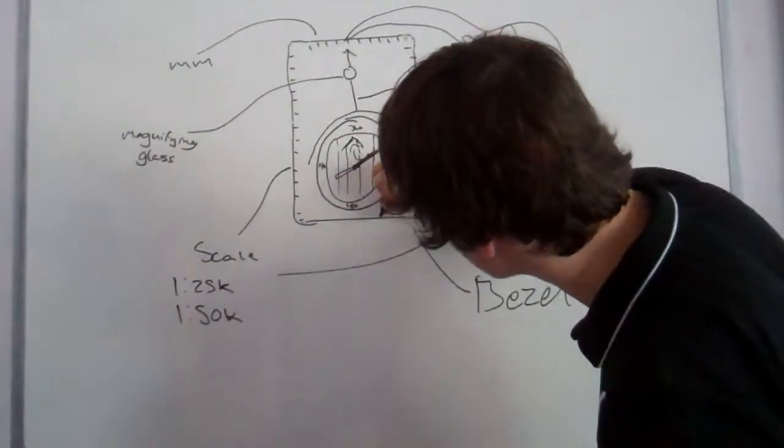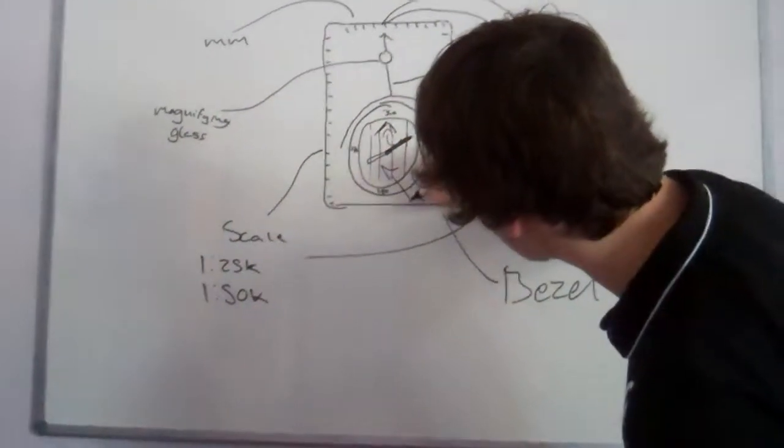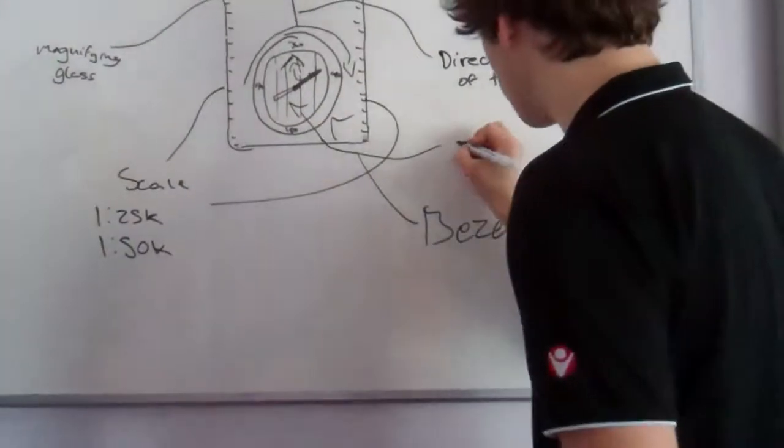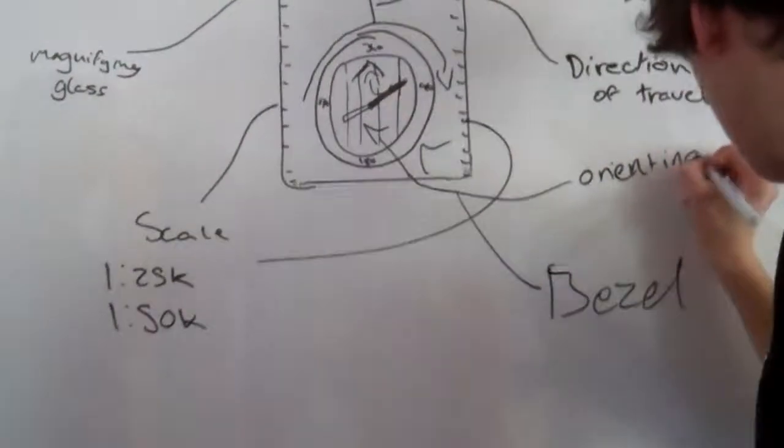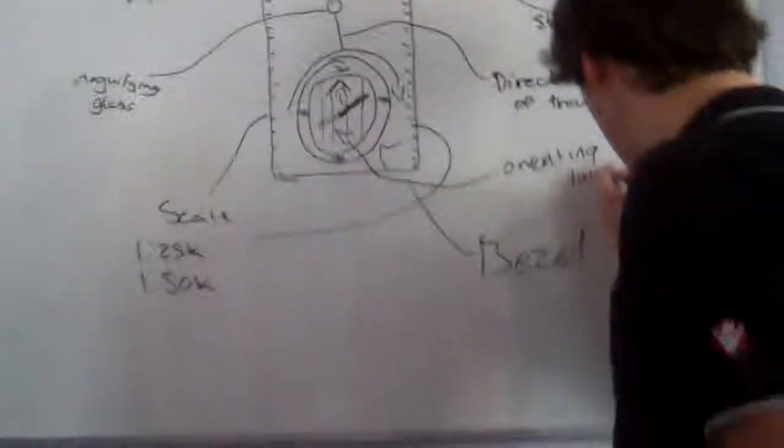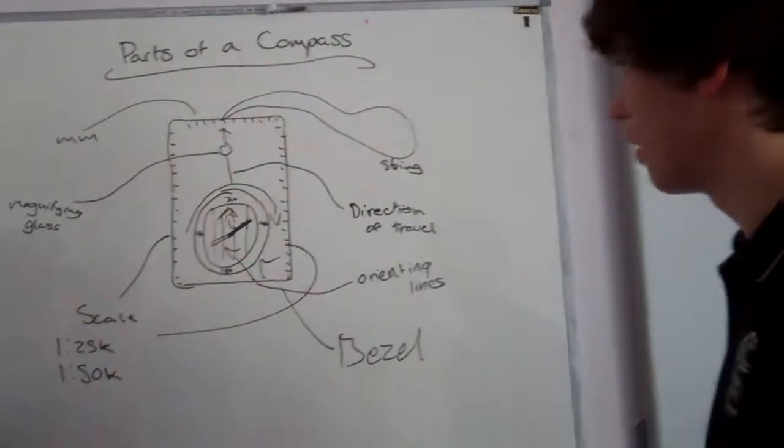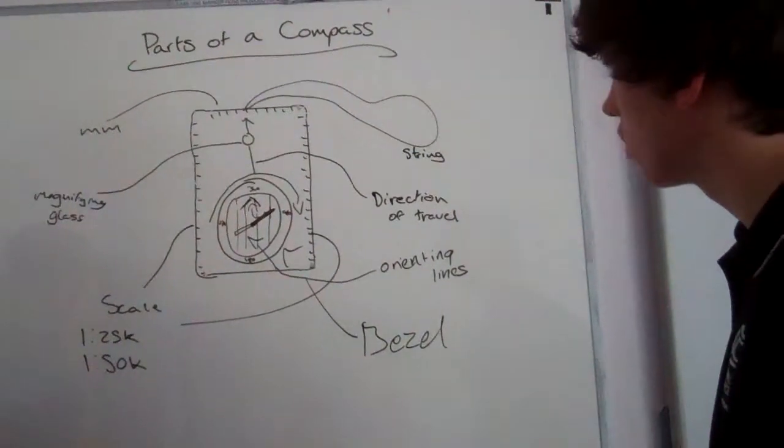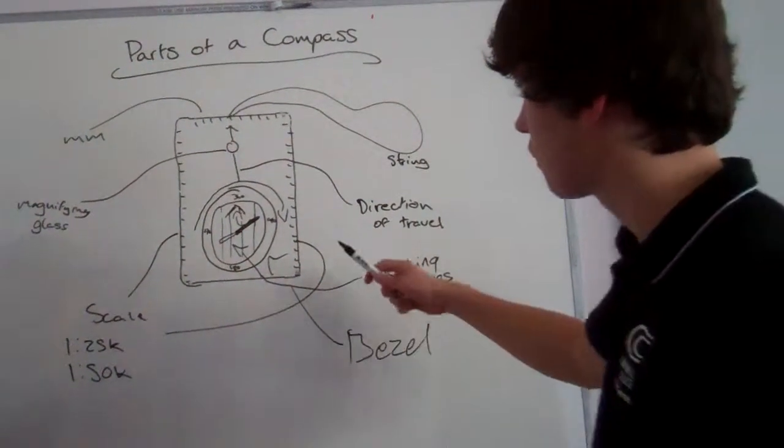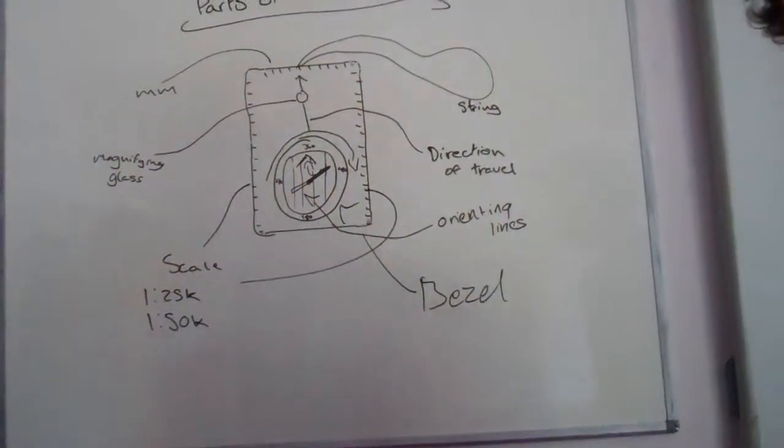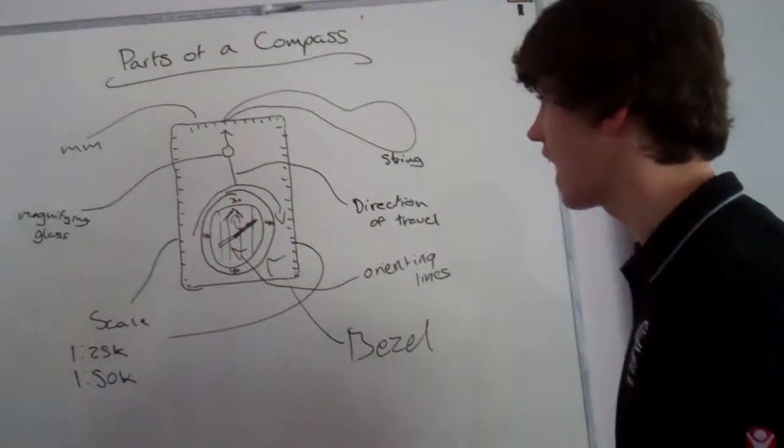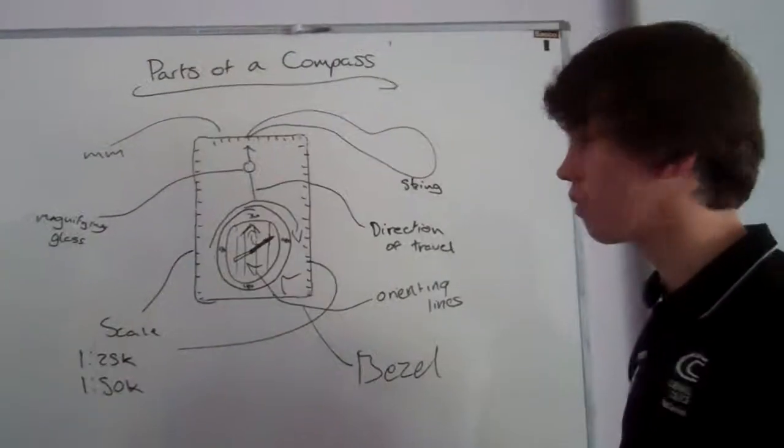These lines here are orienteering lines and they're used to match up with the north-south lines on your map. So the other measurements are in shape with the other map, so you've just set it to everything around you.